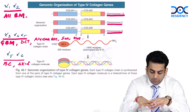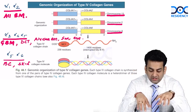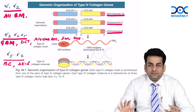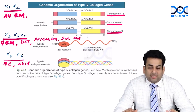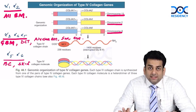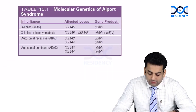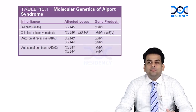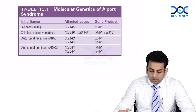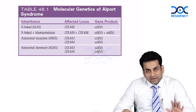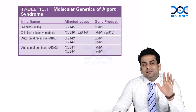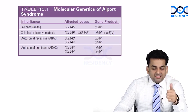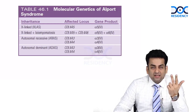I hope you have understood this genomic organization of the type IV collagens and where they are present. Now, coming to the molecular genetics of Alport syndrome, there are primarily three varieties: X-linked, autosomal recessive (AR), and autosomal dominant (AD).